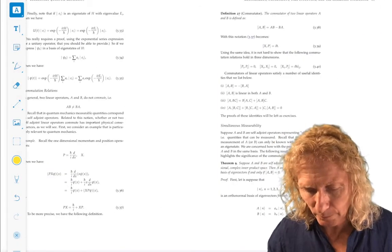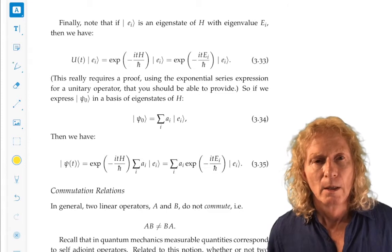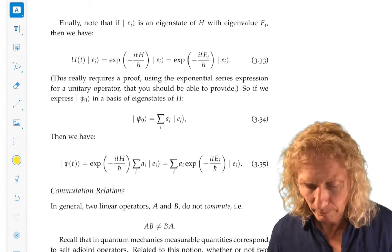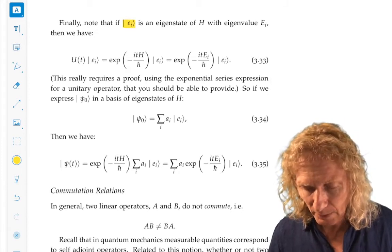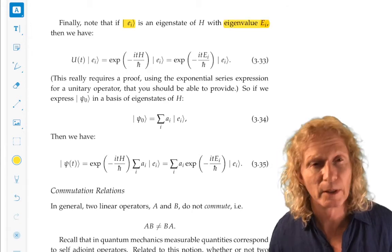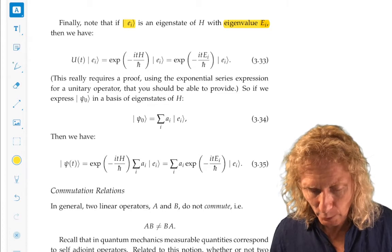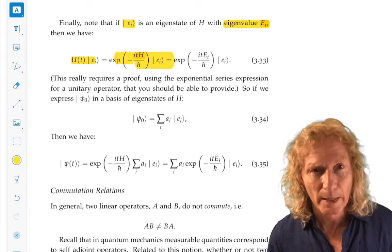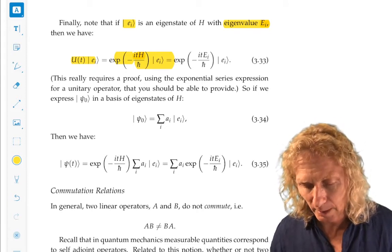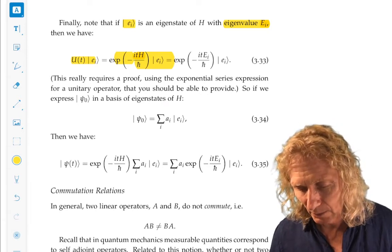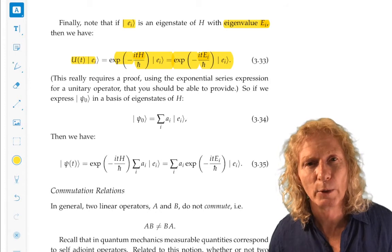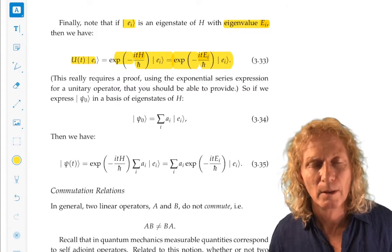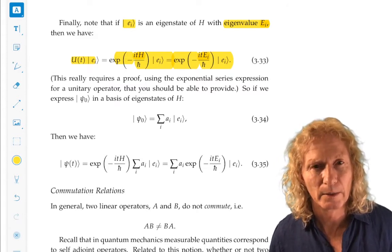There's a couple of further remarks that we could make about particular choices of initial ψ₀. Suppose our initial ψ₀ is an eigenstate with eigenvalue, eigenstate of H with eigenvalue uppercase E_i. Let U(t) operate on that. And if we expand in the exponential series and let it operate on the eigenstate term by term, you can easily see that what you get is e to the minus i eigenvalue divided by ℏ multiplied by the eigenstate.